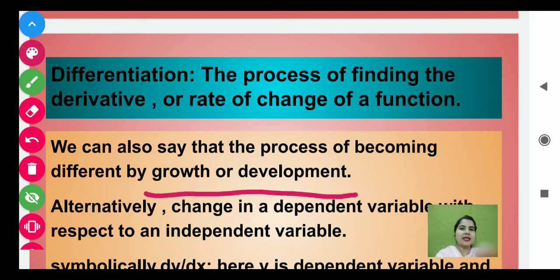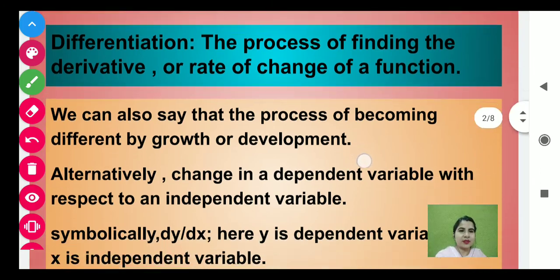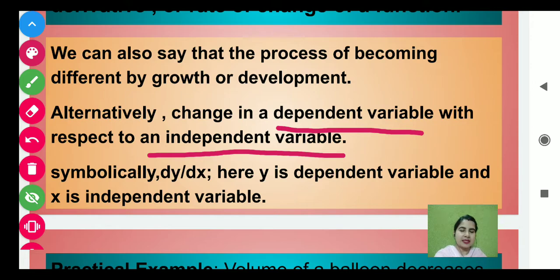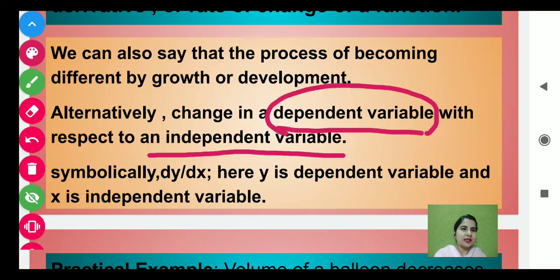Alternatively, we can say: change in dependent variable with respect to an independent variable. Hum yahaan par ye bhi keh sakte hain — change in dependent variable with respect to independent variable. Suppose if a child's height is 2 feet and the height of the child increases with respect to time, then child height is the dependent variable that depends on time, and time is the independent variable.